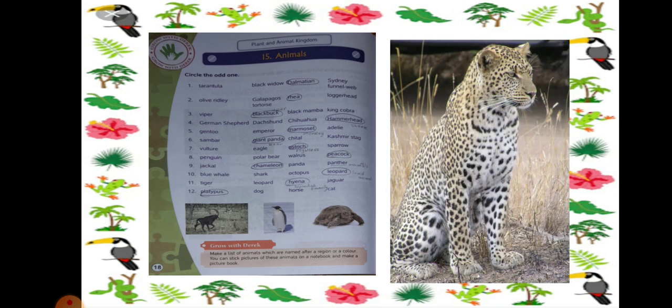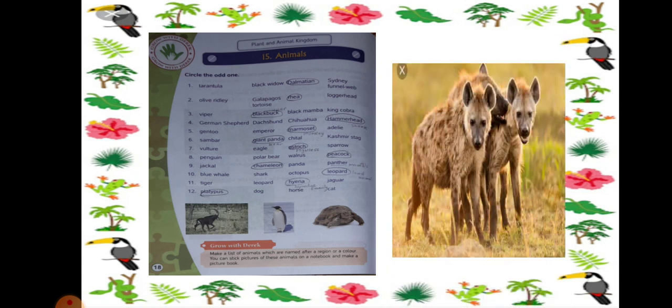Number 11: Tiger, Leopard, Hyena and Jaguar. Out here you can see that Hyena is the odd one out. So you are going to circle Hyena because they are from a different family. They are not from the cat family.